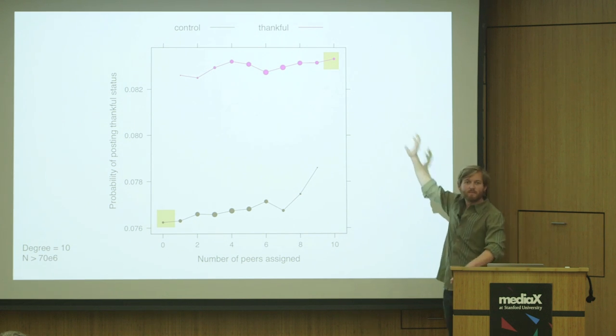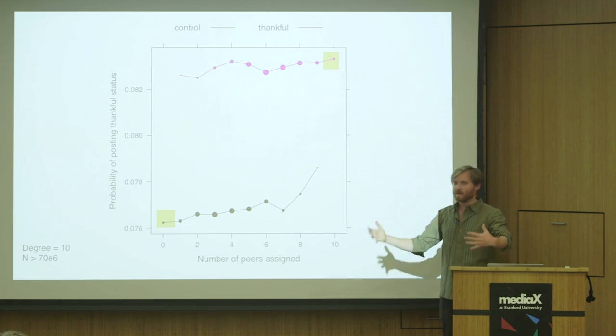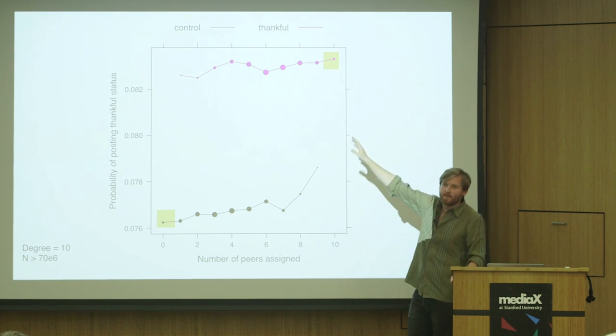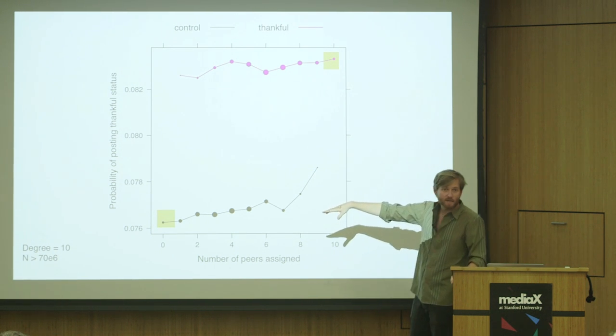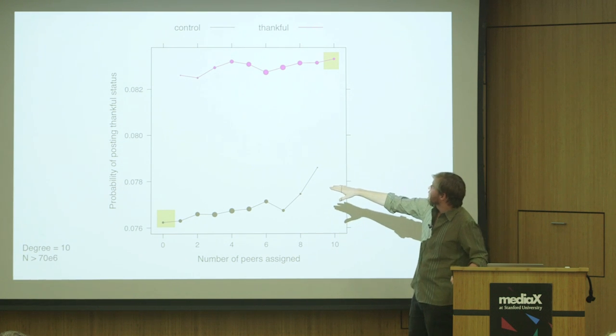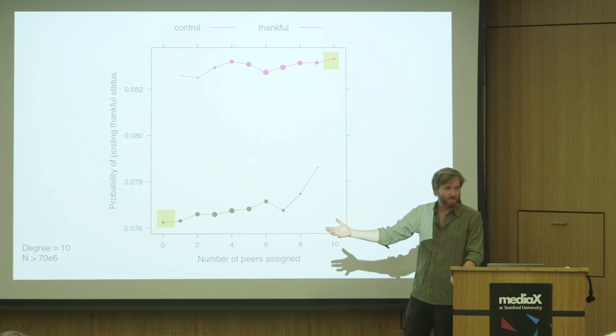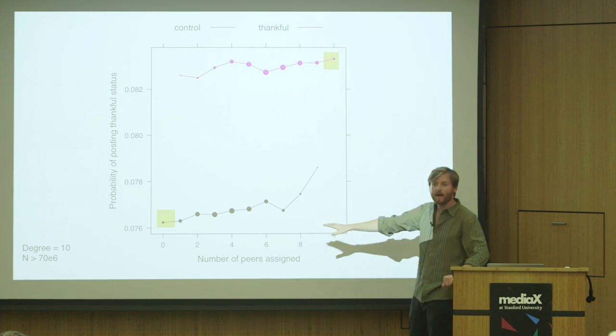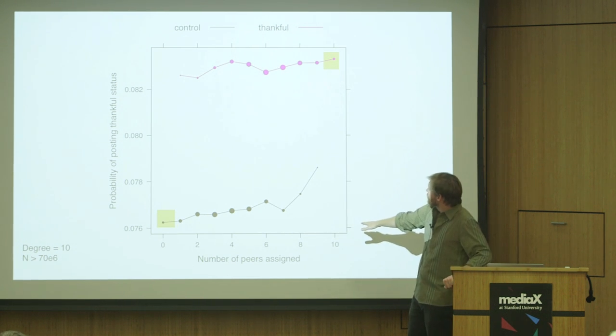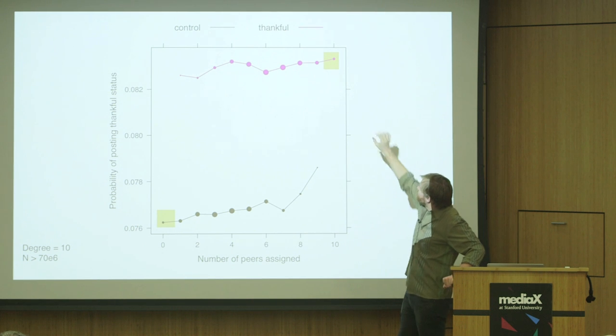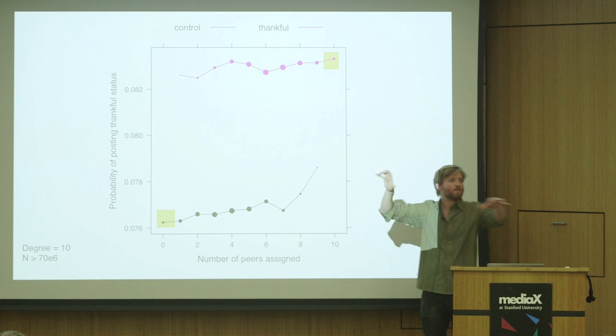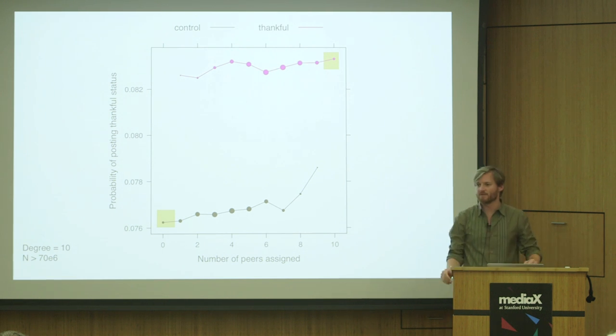This allows us to have more data for estimating what would happen under this extreme case of everyone having the thankful prompt versus everyone having the control prompt. Here we're looking at the probability of an individual posting a thankful status update on Thanksgiving 2012 as a function of whether they themselves have the thankful prompt or control prompt, and how many of their friends also have the thankful prompt. We might want to contrast these extreme conditions, and by doing this graph cluster randomization, we've moved more people into these extreme conditions.